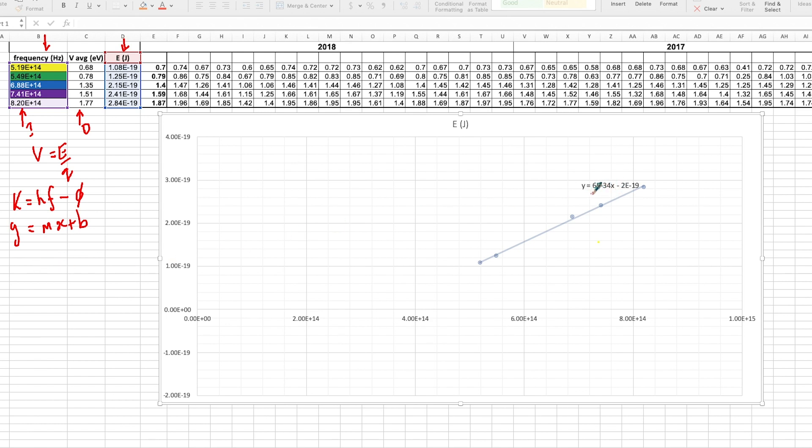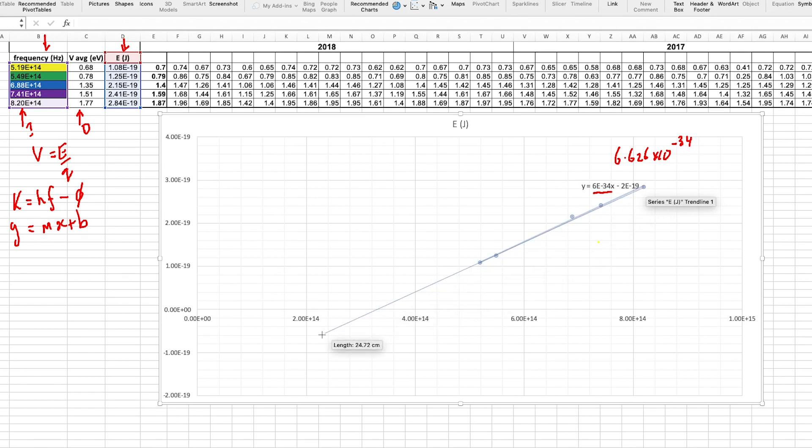So if you look here at the formula, our formula says our gradient is 6e-34. Now that's pretty close, considering this is representing the data that we collected, of Planck's constant, which is 6.626 by 10 to the power of -34. So a pretty good result here. So now what I'm going to do is I'm going to extend this line through the x-axis and onto the y-axis. So here's my line and I'm going to extend this all the way through like so.